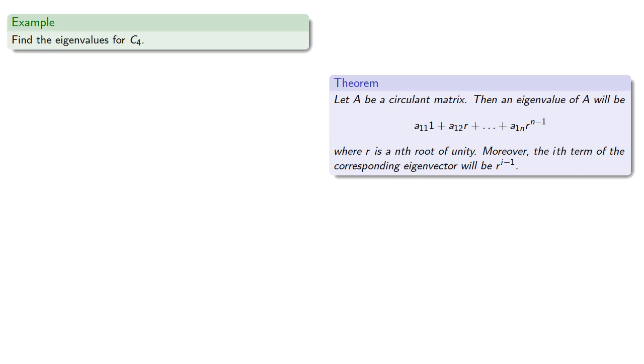The adjacency matrix for C4 is, and so the eigenvalues will be r plus r cubed, where r is a fourth root of unity.